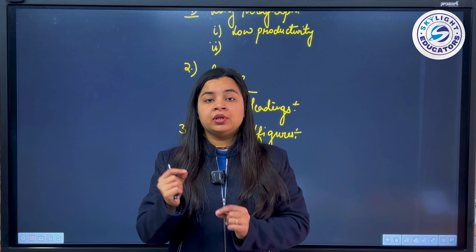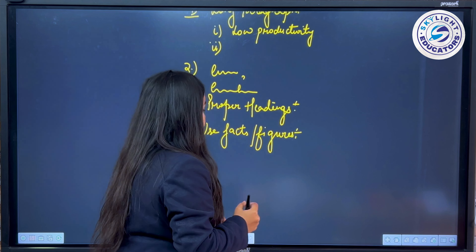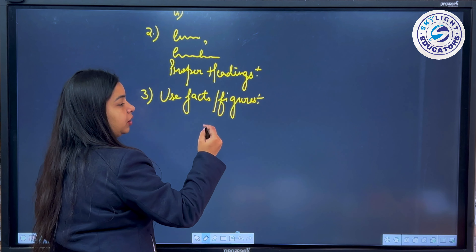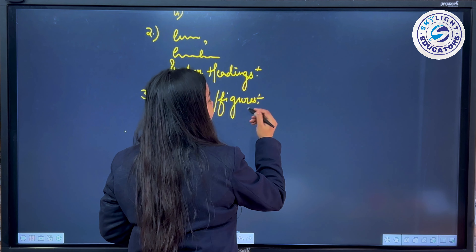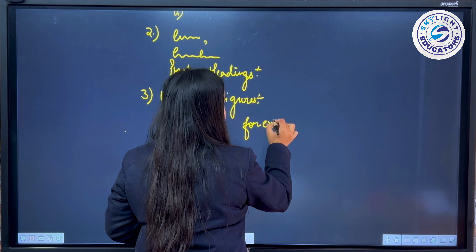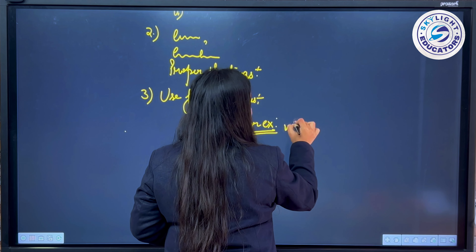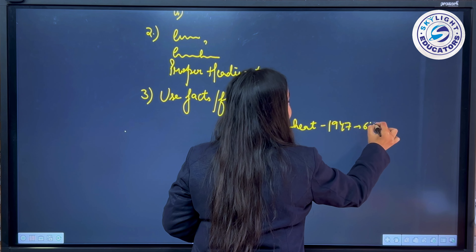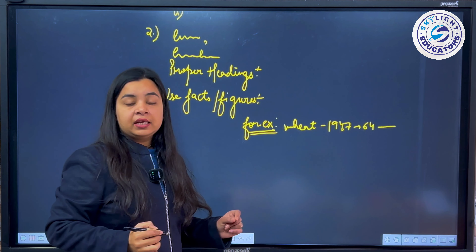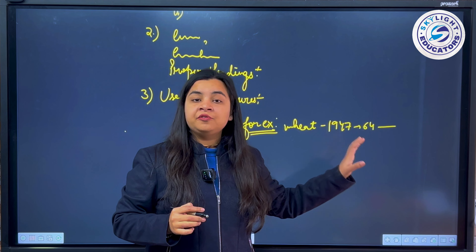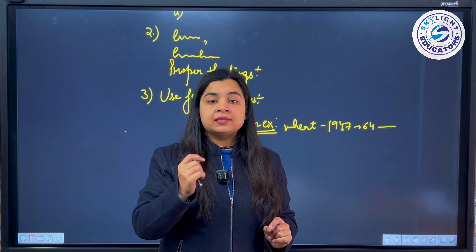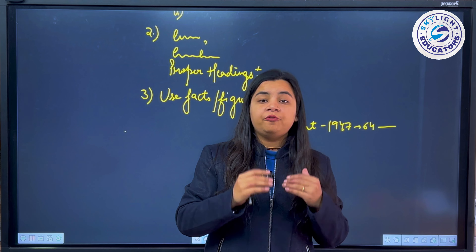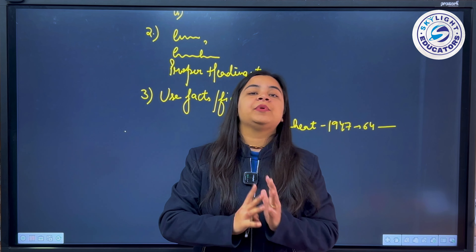You have to use proper facts where applicable. For example, instead of just writing 'land productivity was very low,' you should write that wheat production in 1947 was 64 lakh tons only. So with proper terms and proper facts and figures, explain your answer. Wherever you can give examples and facts, prove your points with them.